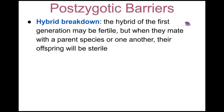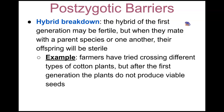In hybrid breakdown, the hybrid of the first generation may be fertile, but when they mate with a parent species or one another, their offspring will be sterile. An example: farmers have tried crossing different types of cotton plants, but after the first generation of plants they do not produce viable seeds to allow for the continuation.